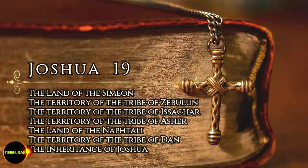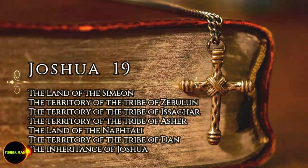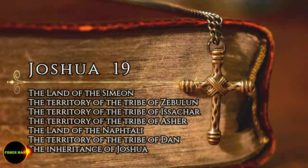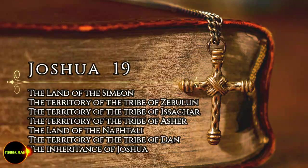The seventh lot came out for the tribe of Dan, clan by clan. The territory of their inheritance included Zorah, Eshtael, Urshemesh, Sheolaban, Ajalon, Ithla, Elan, Timna, Ikron, Eltica, Gibethon, Baalath, Jihad, Beni-Bearach, Gath-Rimen, Me-Jarkin, and Rakan, with the area facing Joppa.